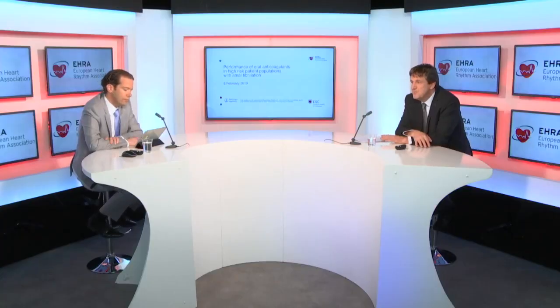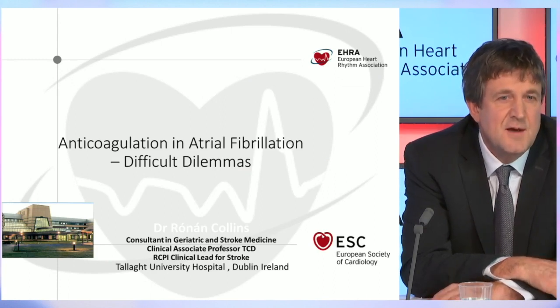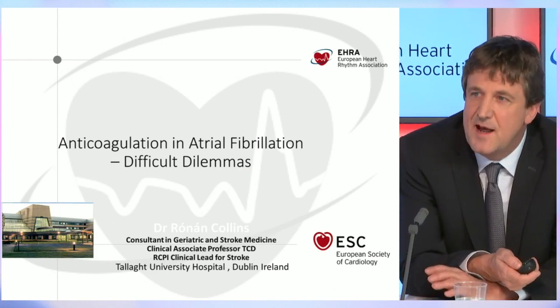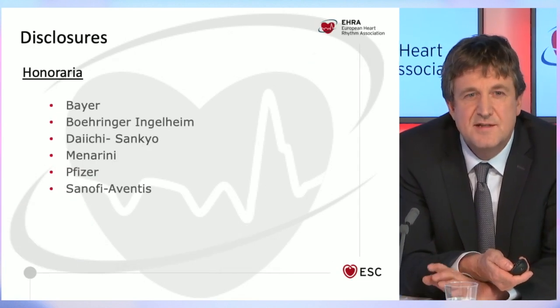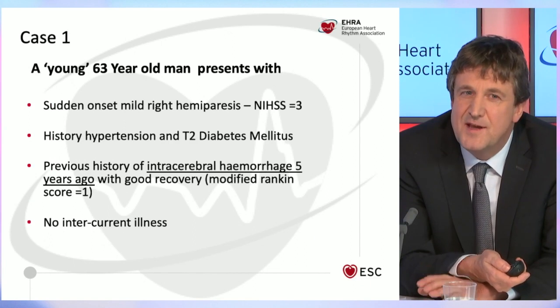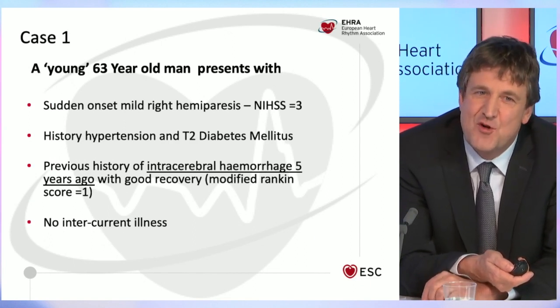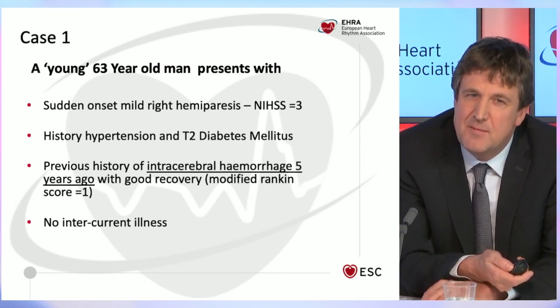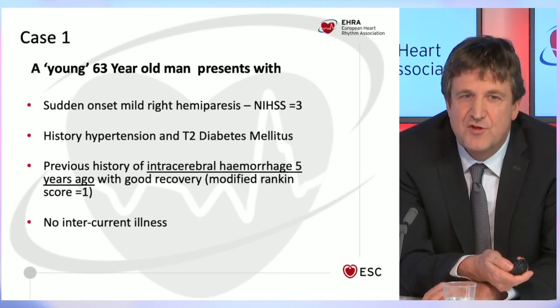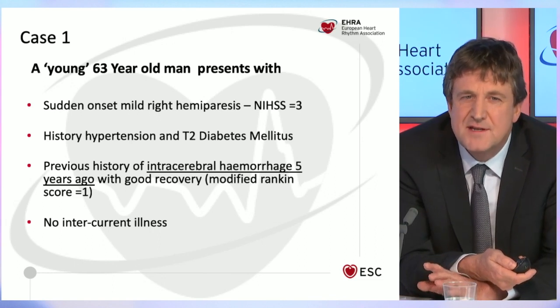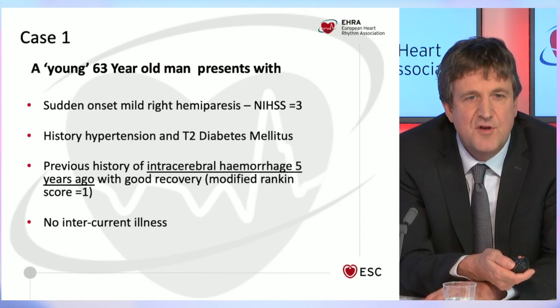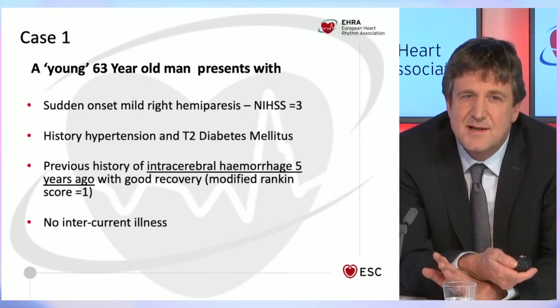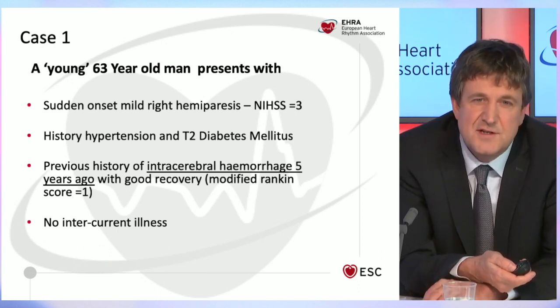Coming back to the case: I work as a stroke physician and geriatrician at Tallaght University Hospital, working closely with cardiology colleagues on atrial fibrillation. This is one of the more difficult cases we've had recently. It's a 63-year-old man who presented with a relatively mild stroke — mild right hemiparesis, scoring three on the NIH Stroke Scale for drift — with background history of hypertension and diabetes. He had an intracerebral hemorrhage five years ago from which he made a good recovery. Technically, if he had atrial fibrillation, he would be CHADS-VASc 4.